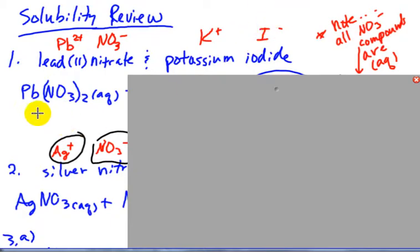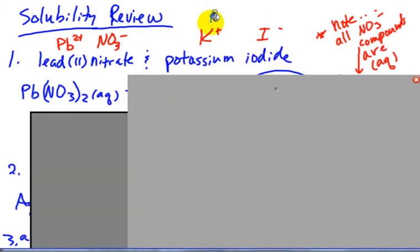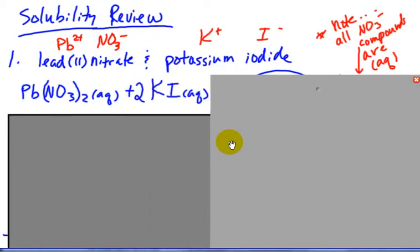So you can see that lead and nitrate - we need 2 nitrates to balance 1 lead. This is the formula for lead(II) nitrate: Pb(NO3)2. Plus 1, minus 1, they come together in a 1 to 1 ratio, so KI.